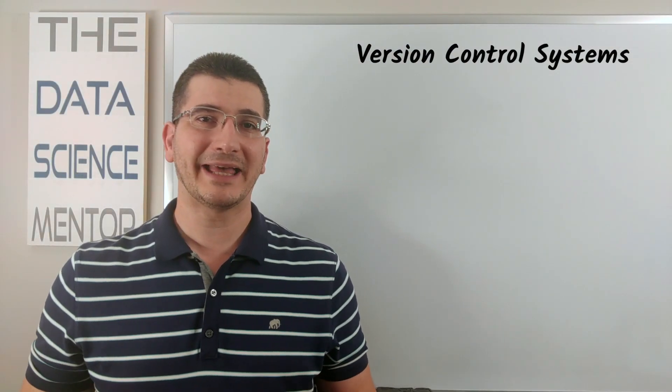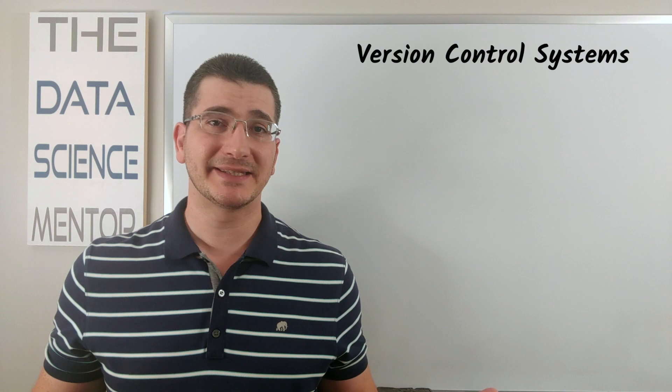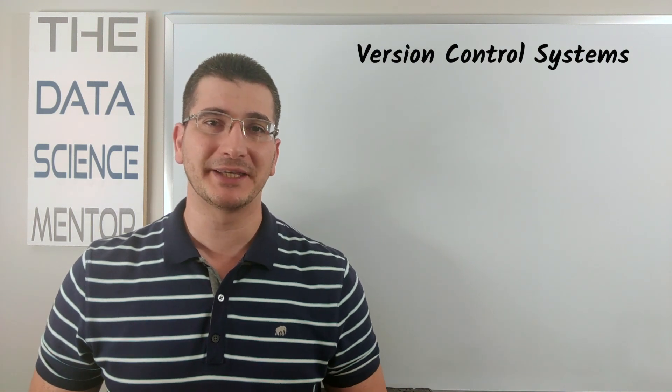In the video on how to get started with becoming a data scientist, I mentioned that being familiar with version control systems is one of the tools that you should work on adding to your tool belt. If you haven't seen that video yet, I'll link to it in the description below so you can check it out.